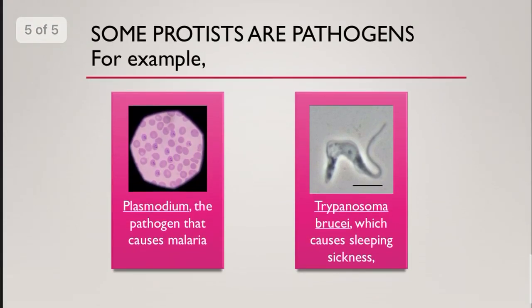Some protists are pathogens. For example, Plasmodium is the pathogen that causes malaria, and Trypanosoma brucei causes sleeping sickness.